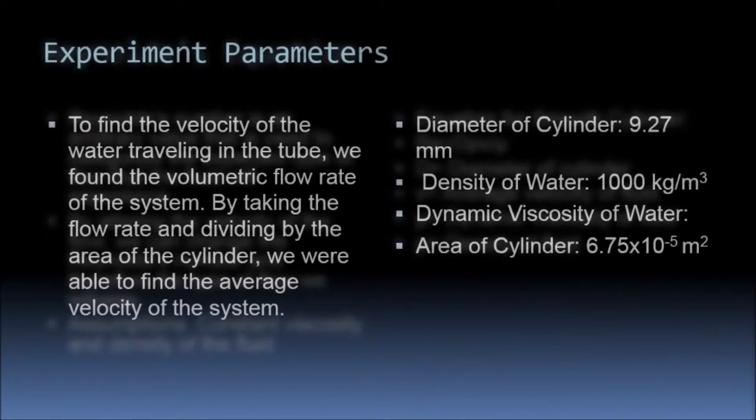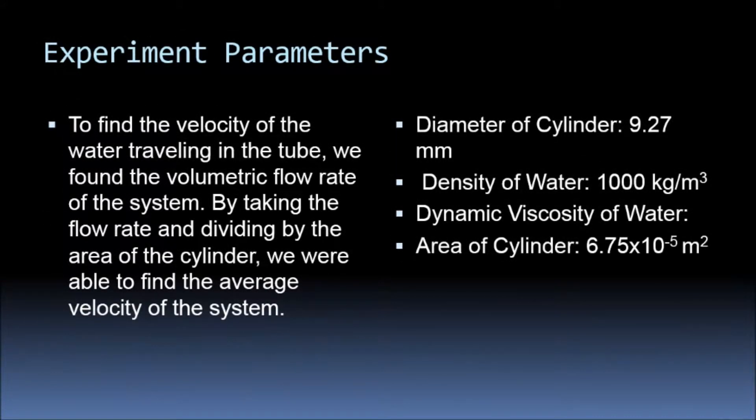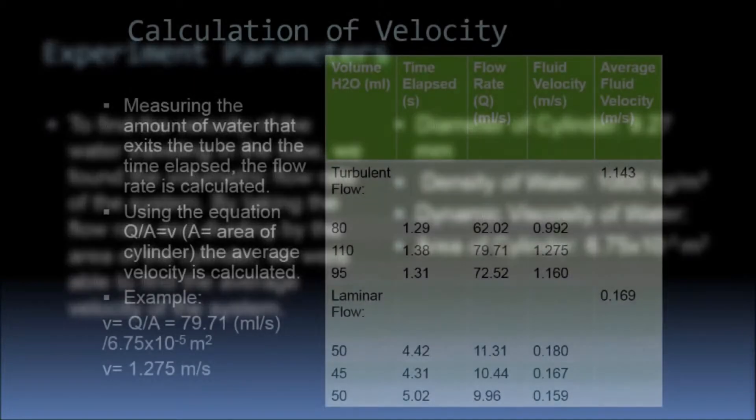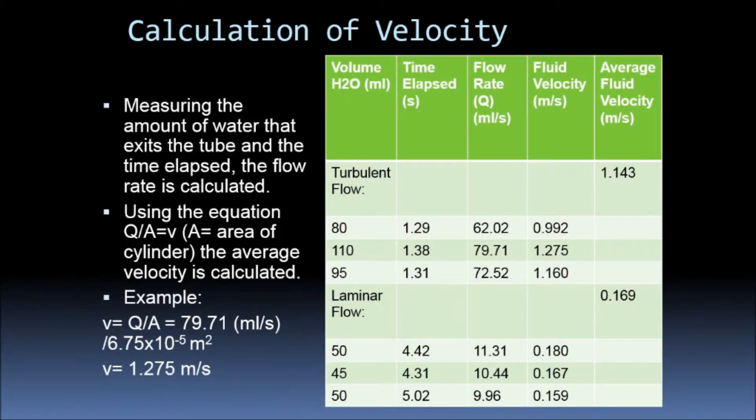By measuring the volume of water that flowed out of the tube over a known period of time, the volumetric flow rate can be calculated. Then, using the equation velocity equals flow over area, the average velocity can be calculated.